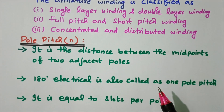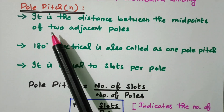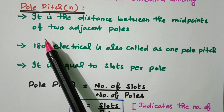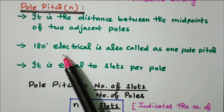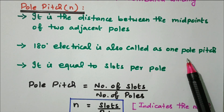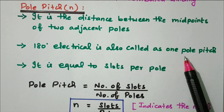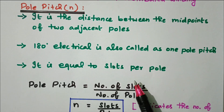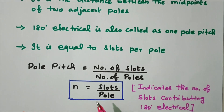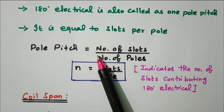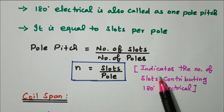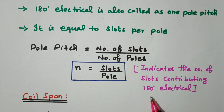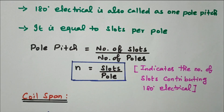First we will see the pole pitch. Pole pitch is the distance between the midpoints of two adjacent poles. 180 degrees electrical is also called one pole pitch. The formula for pole pitch is equal to the number of slots divided by the number of poles — that is, slots per pole — which indicates the number of slots contributing 180 degrees electrically.